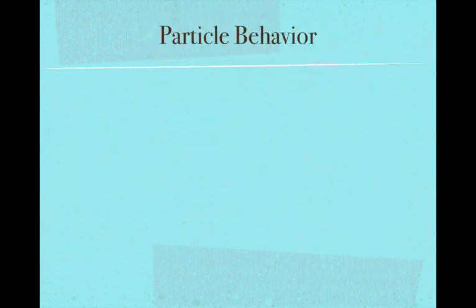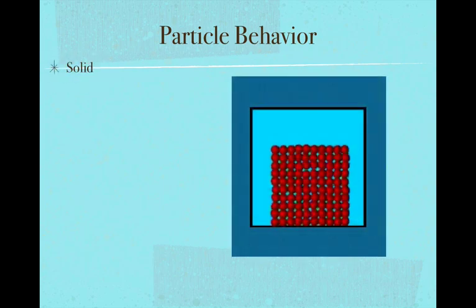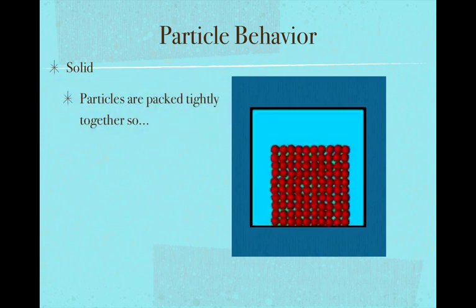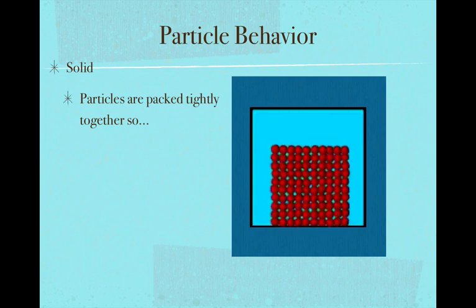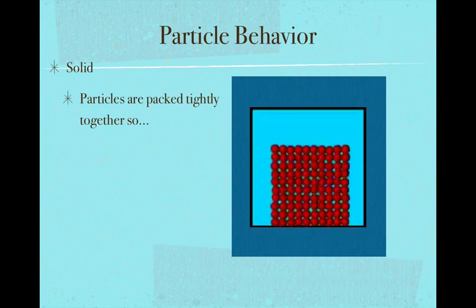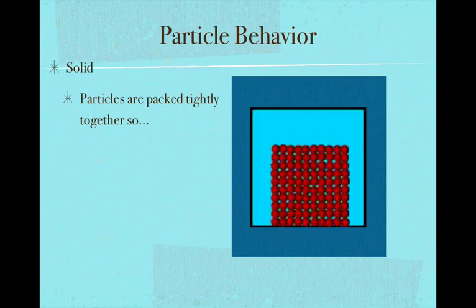Let's start by talking about the behavior of the particles when they're in different states of matter. Starting with solid — the little red dots in the animation represent particles in a solid. You can see that these particles are packed tightly together, there is no room between them, and they can't be pushed together anymore. They're connected by what's called an intermolecular bond, which keeps these particles attracted to one another.